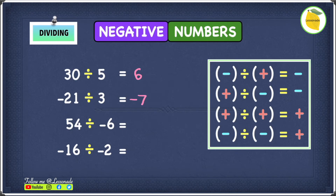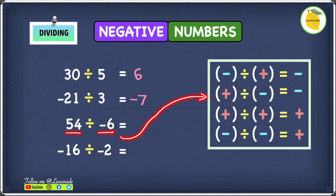The next example is 54 divided by minus 6. 54 is a positive number and minus 6 is negative. In this example, we have a positive and a negative number. When two of the signs are different, your answer will be negative. So 54 divided by minus 6 will give us an answer of minus 9.